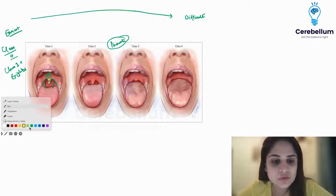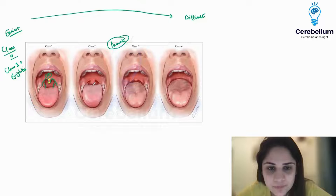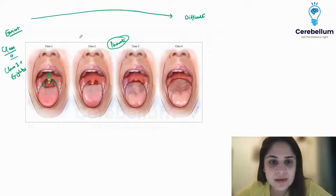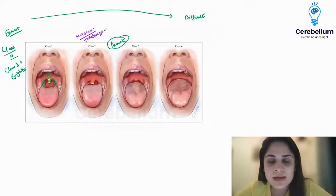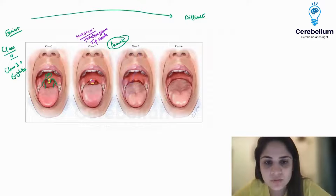When we come to Mallampati class 2, I'll tell you what is not seen. The tip of the uvula is not seen — it is obscured — and the tonsillar pillars cannot be seen. What you can see is the base of the uvula, the soft palate, and the hard palate.